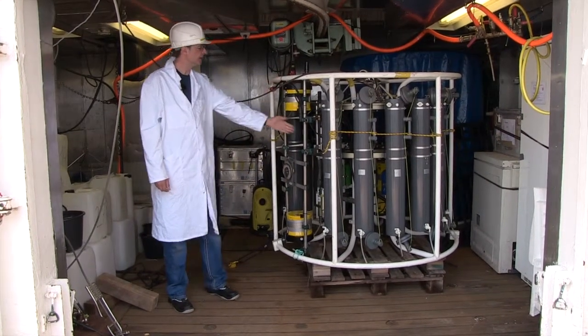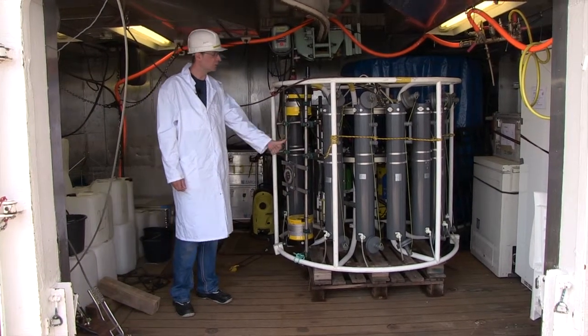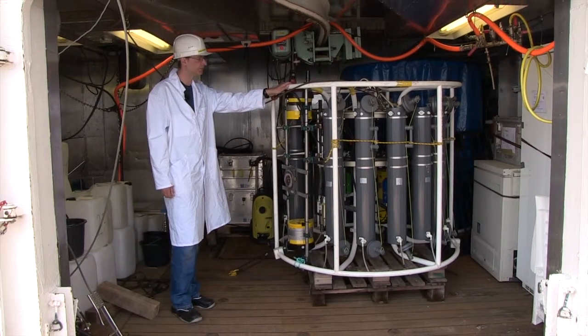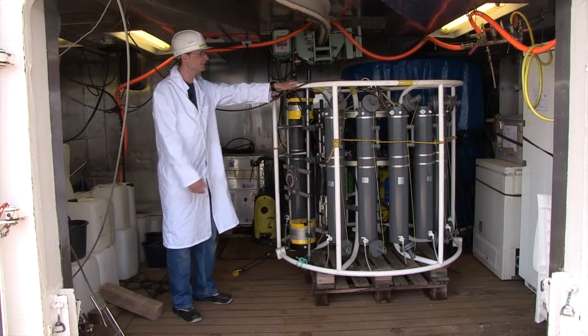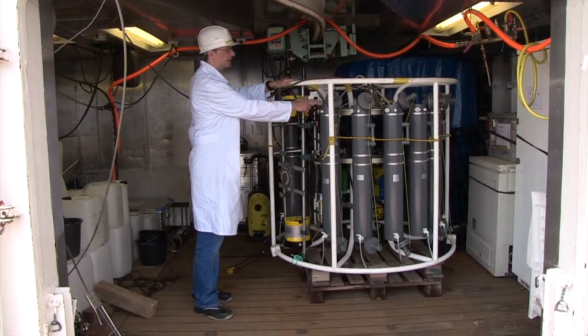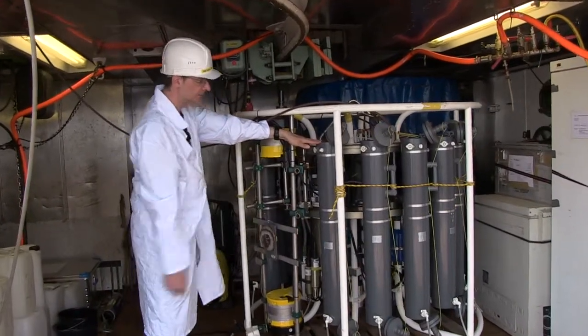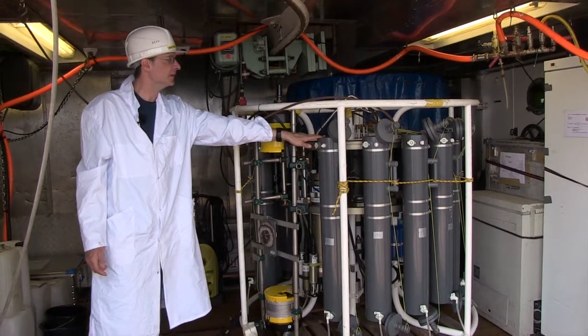This is the CTD rosette. In the center, it contains a physical measuring unit which records temperature, conductivity, and depth. As soon as the CTD rosette is lowered into the water, we are able to close each of the 14 individual water samplers so that they retain the water that is scooped up, bringing it to the surface.